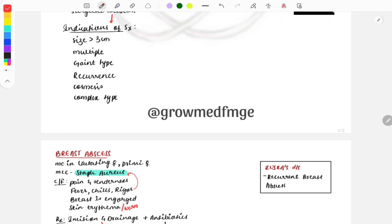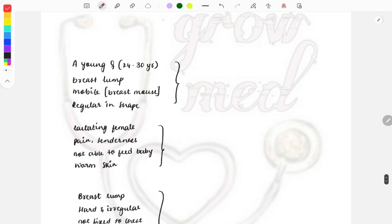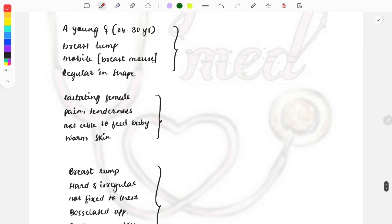Let's quickly discuss how clinical cases will appear in the exam. A young female, 14 to 30 years old, presents with a breast lump that's mobile (breast mouse) and regular in shape. This points to fibroadenoma. If an image-based question is given, it helps you get the correct answer.